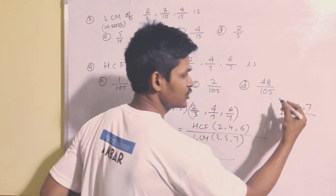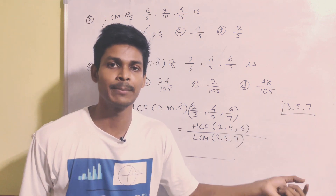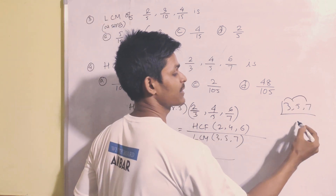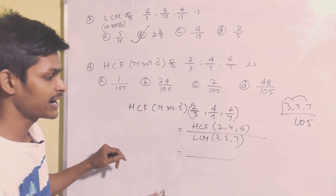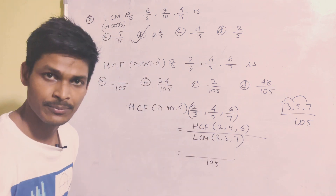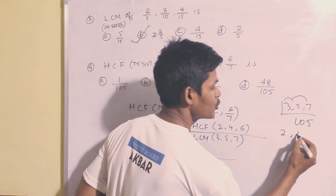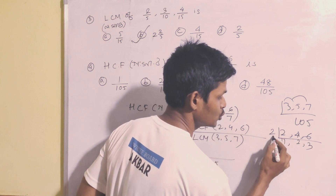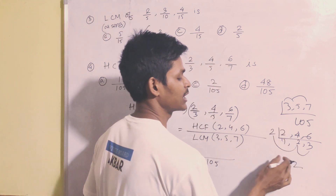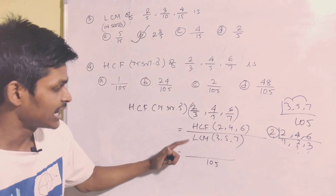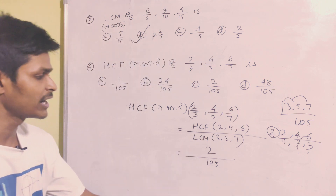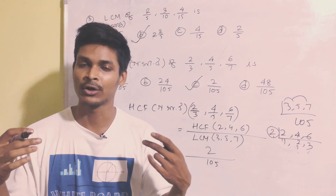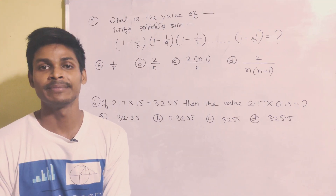LCM of 3, 5, 7: these are prime numbers, so we multiply them: 3 times 5 is 15, 15 times 7 is 105. So LCM of 3, 5, 7 is 105. HCF of 2, 4, 6: the common factor is 2, so HCF is 2. Therefore the answer is 2 by 105.